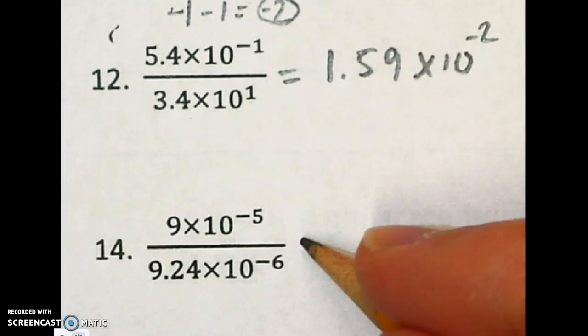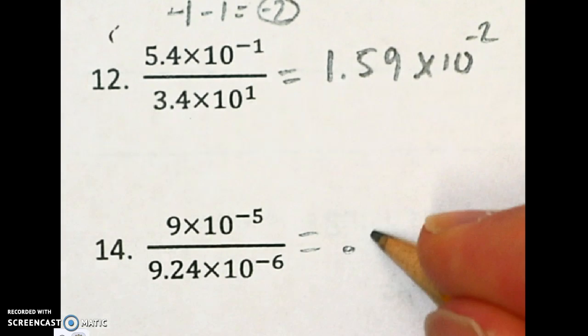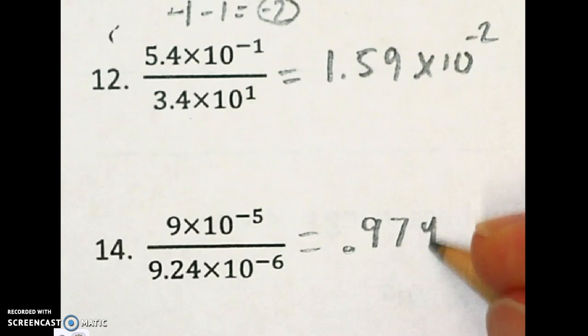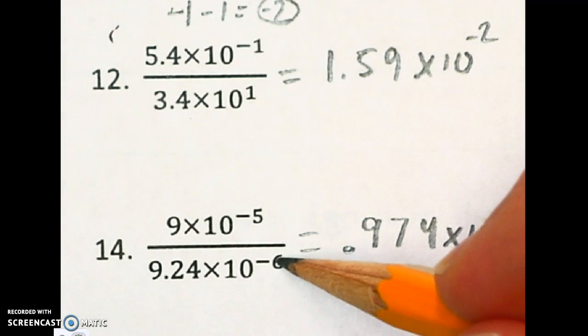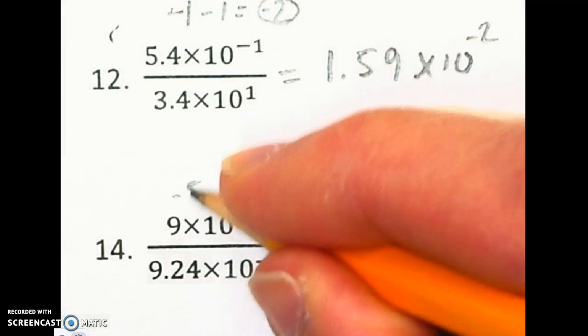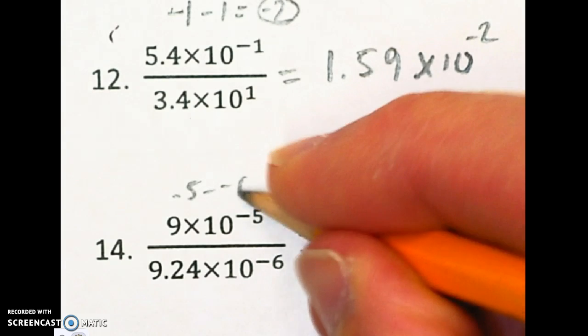0.974. So I'm going to put down 0.974, 0.974 times 10. And let's subtract our powers. Negative 5 minus negative 6. So negative 5 minus negative 6.